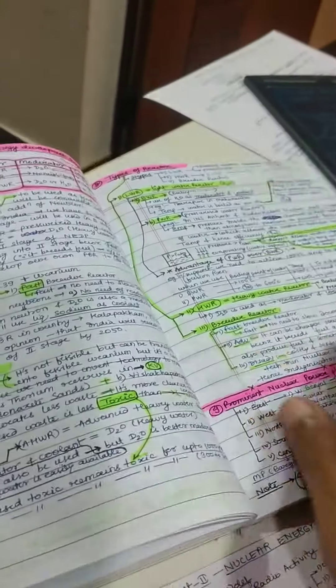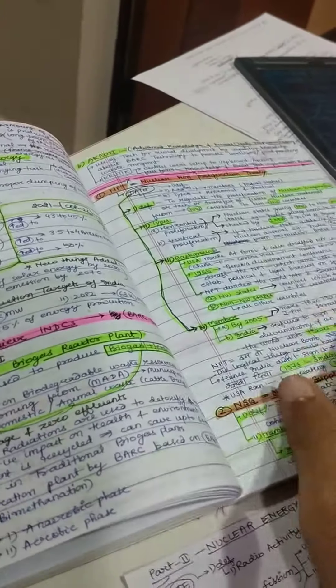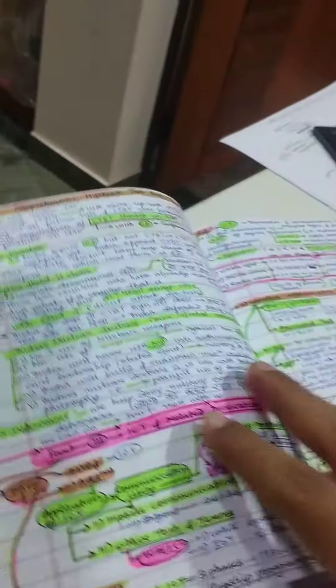Three pages, four pages, five pages, six pages. Six pages on one nuclear energy topic, but I want to summarize it in one page. So what I do is